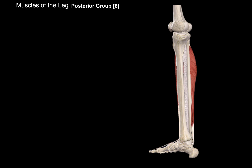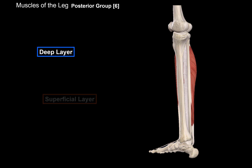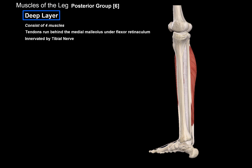Now let's turn the leg around and cover the posterior group. The posterior group muscles are divided into the deep layer and the superficial layer, and these two layers are separated by a deep fascia or deep lamina. We will start with the deep layer first. The deep layer consists of four muscles, and their tendons run behind the medial malleolus under the flexor retinaculum. All of these muscles are innervated by the tibial nerve.